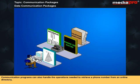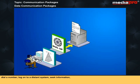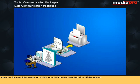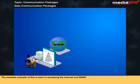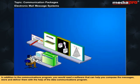Communication programs can also handle the operations needed to retrieve a phone number from an online directory, dial a number, log on to a distant system, seek information, copy the location information on a disk, or print it on a printer and sign off the system. The simplest example of this is seen in accessing the internet and WWW. In addition to the communications program, you would need a software that can help you compose the messages, store, and deliver them with the help of the data communications program.